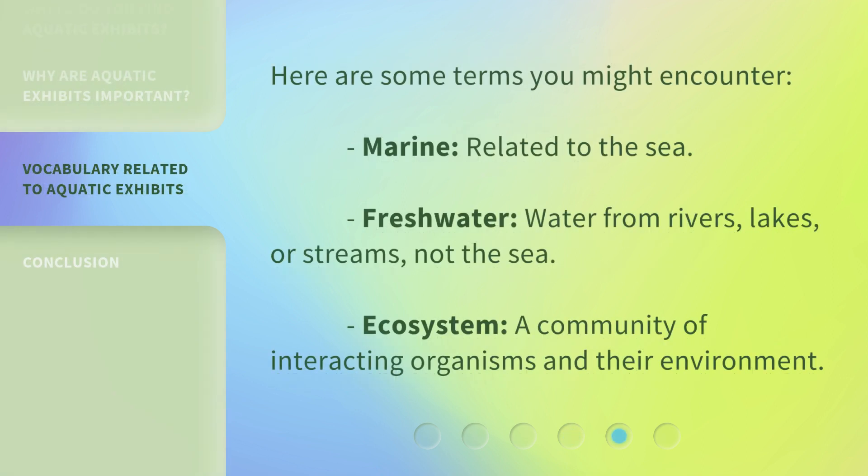Here are some terms you might encounter. Marine: related to the sea. Freshwater: water from rivers, lakes, or streams — not the sea. Ecosystem: a community of interacting organisms and their environment.